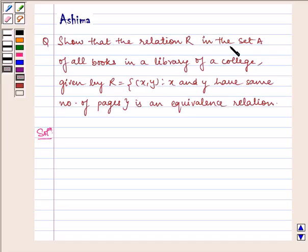Show that the relation R in the set A of all books in a library of a college given by R = {(x,y): x and y have same number of pages} is an equivalence relation.